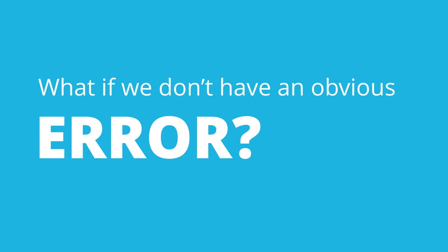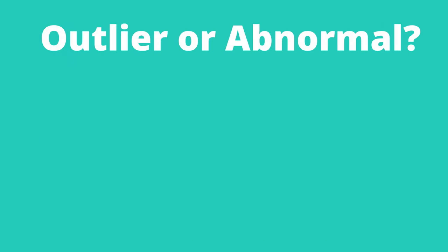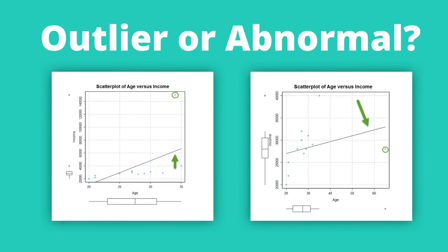So what if we don't have an obvious error, and we aren't certain whether the data is accurate or not? If we have a situation such as the two instances above, where it could be correct,